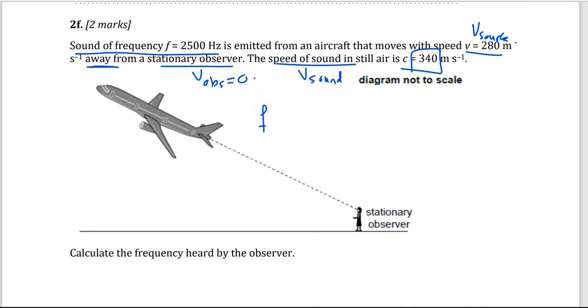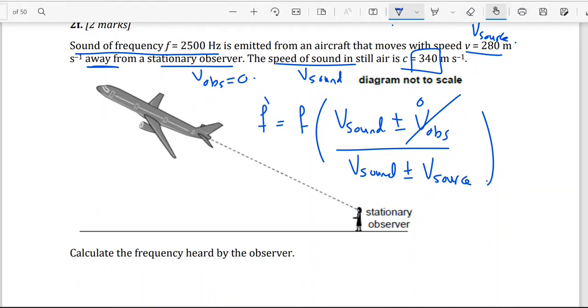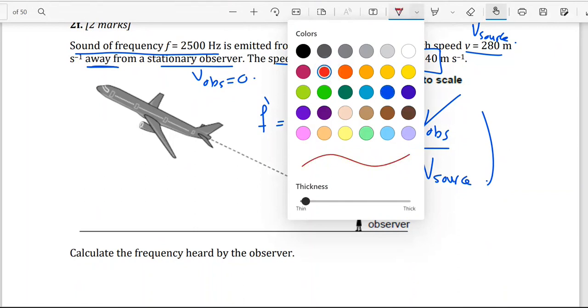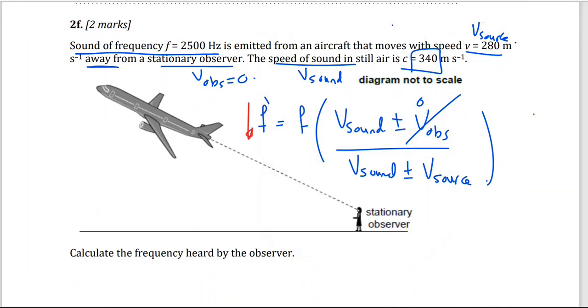If you remember the Doppler effect formula, the observed frequency f prime equals the original frequency times velocity of sound, positive or negative, the velocity of the observer, and in our case, the observer is zero, divided by velocity of sound, positive or negative, velocity of the source. Now, the source is moving away. That means the frequency, the observed frequency will be lower. The sound the observer will hear will be lower. The sound pitch is lower.